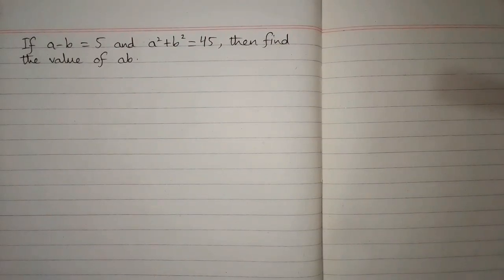If a minus b is equal to 5 and a square plus b square is equal to 45, then find the value of ab.